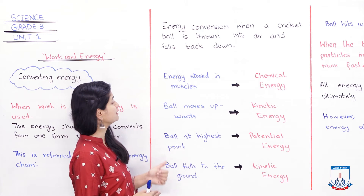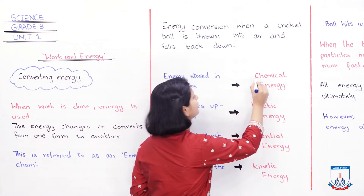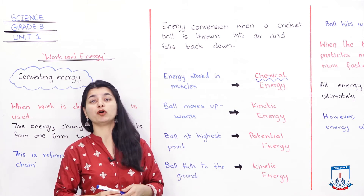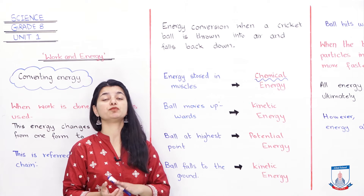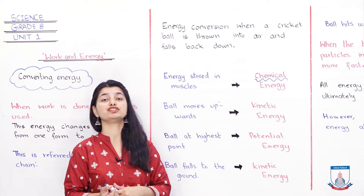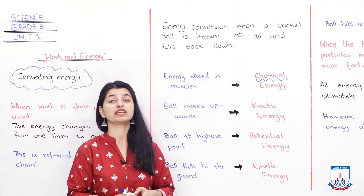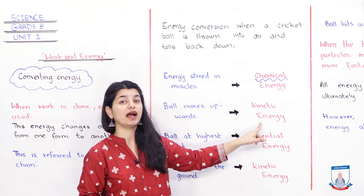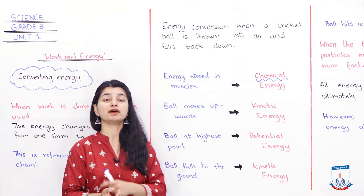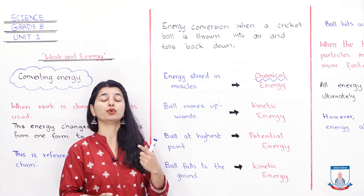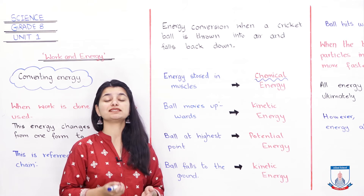First of all, when you throw the ball using your arm, which energy is being used? In your muscles, it is stored chemical energy. In our body, chemical energy is produced because of chemical reactions. So when you put the ball in your hand and throw it, the ball moves upwards, and because objects in motion have kinetic energy — it becomes kinetic energy.